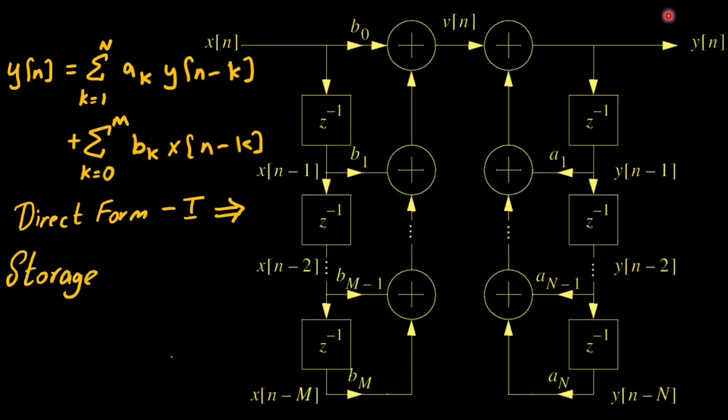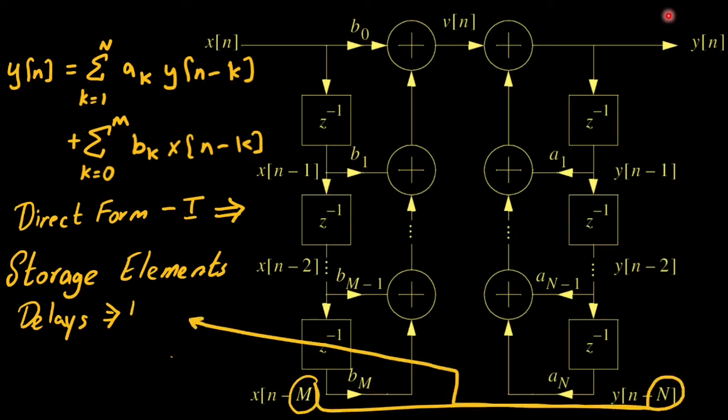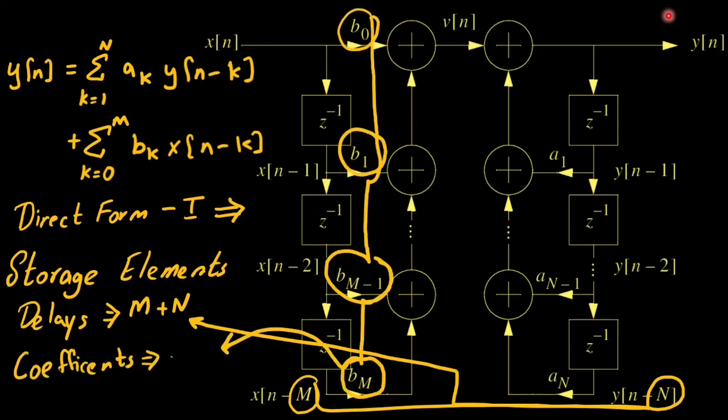Regarding the storage element requirements, unit sample sequence delays are m plus n. Whereas coefficient storage requirement is m plus 1 plus n.